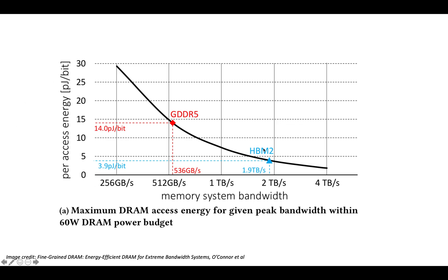They show two technologies: HBM2 has an access energy of around 4 picojoules per bit, and GDDR5 has an access energy of around 14 picojoules per bit. Plain DDR might be a little bit higher, in the neighborhood of something like 20 picojoules per bit.